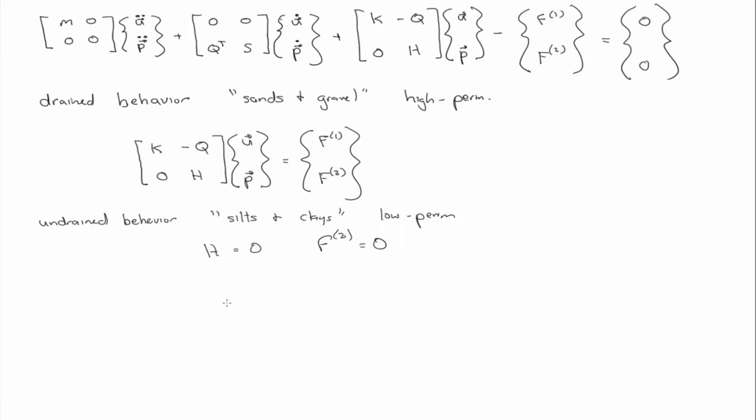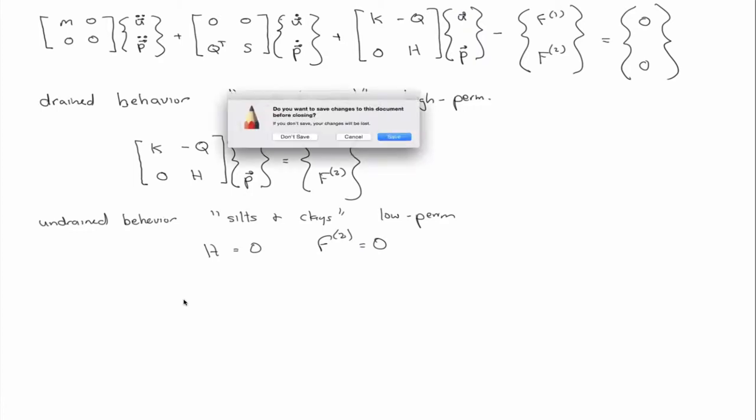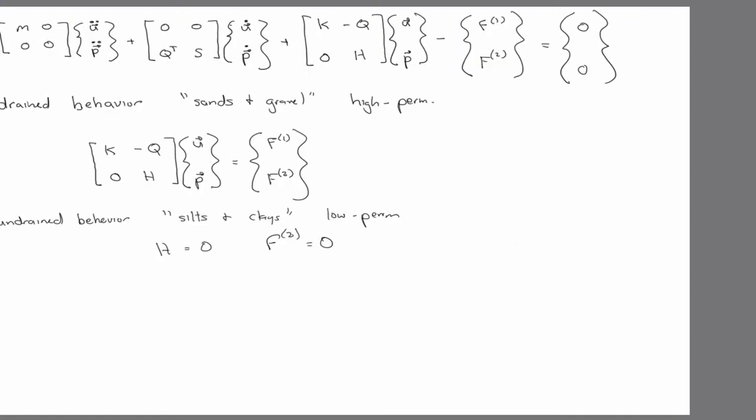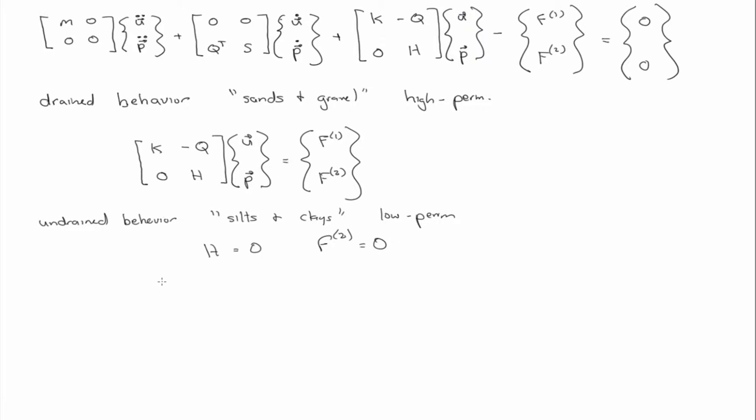And so if you revisit, let's go back and look at it. If you revisit this equation with H equal to zero, F2 equal to zero, so you just have Q and S. So we're going to write that in a compact way. So we have Q.